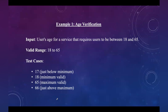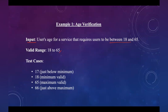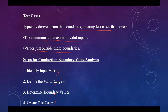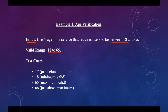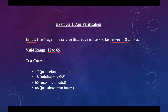Here are a few examples of boundary value analysis. The first is age verification. The input is user age for a service that requires users between the age group of 18 and 65. So the valid range is between 18 to 65. Next, we need to create the test cases by identifying the boundaries. The boundary values are 18 and 65.